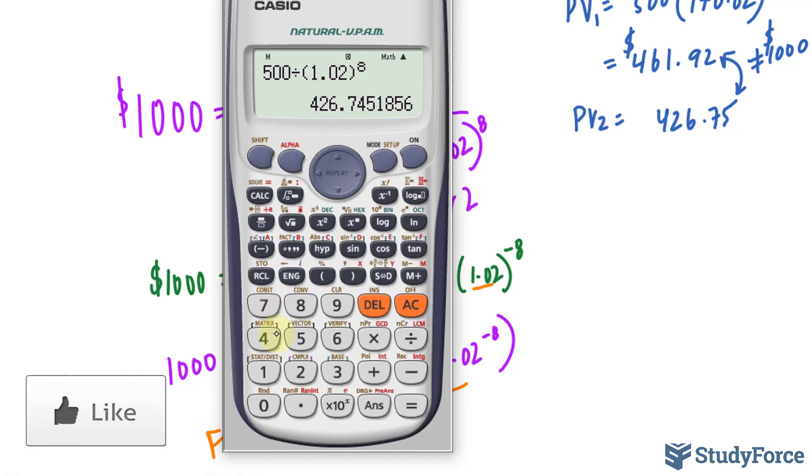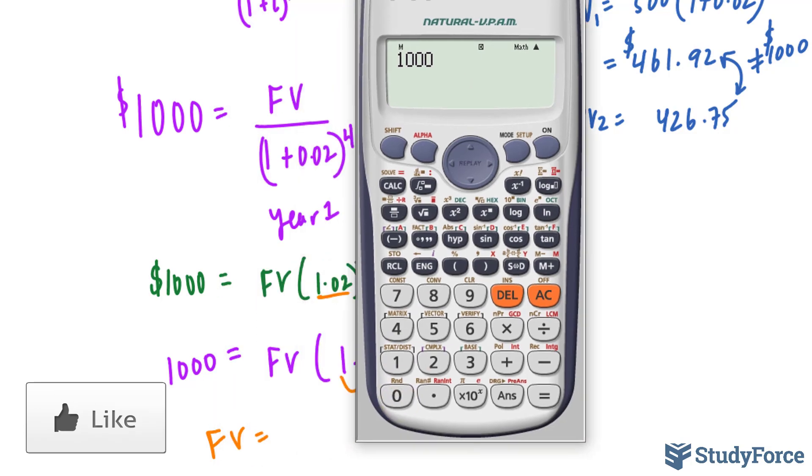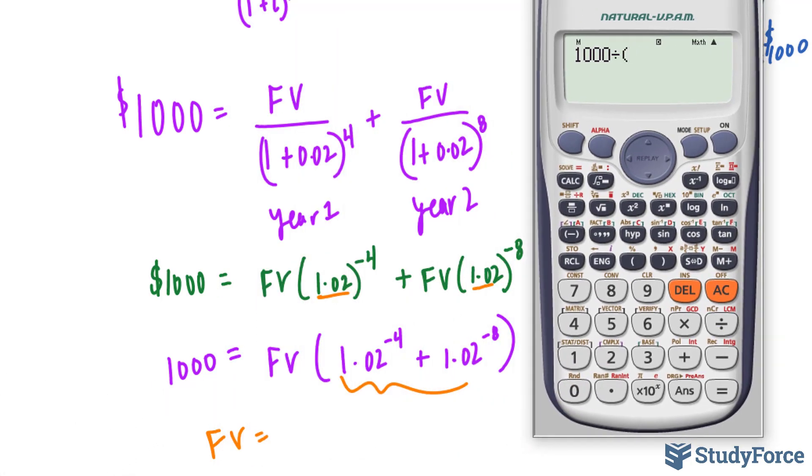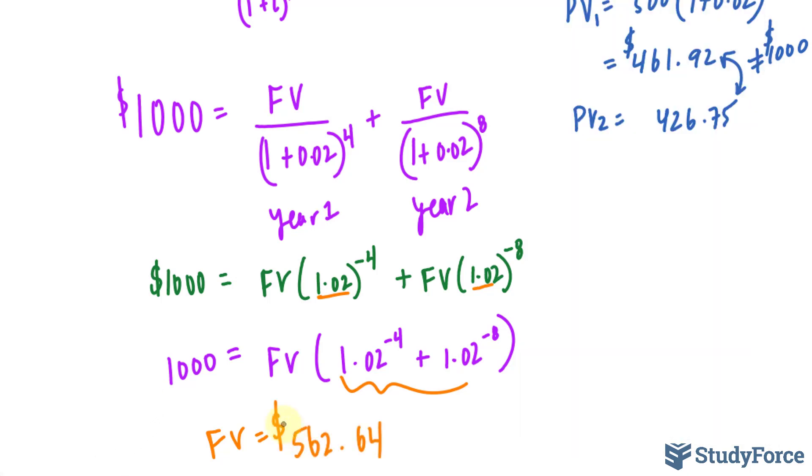Let me show you what I mean. So I'll take 1,000 and divide that by 1.02^-4 + 1.02^-8, and this gives us 562.64. This means that the equal payment 1 year and 2 years from today must be 562.64 such that when discounted 4 periods and discounted 8 periods, the sum of their present values will equal 1,000.